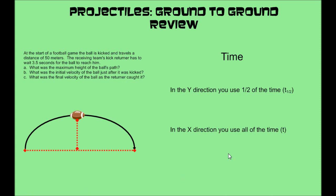The time in the air is a little tricky — there are two ways to look at it. In the x direction, because the ball uses the whole path in x, you will use all of the time. So if the ball is in the air for 3.5 seconds total, we use the whole 3.5 seconds when calculating anything in the x direction.